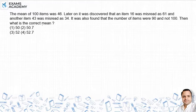Later on it was discovered that item 16 was misread as 61 and another item 43 was misread as 34. It was also found that the number of items were 90, not 100. Then what is the correct mean?